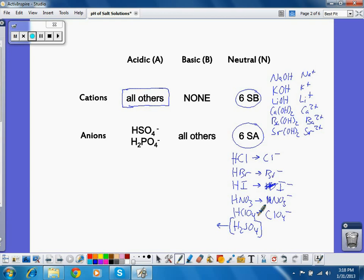So then, pretty much every other anion is basic with two exceptions. And the two exceptions are the conjugate bases of polyprotic acids.